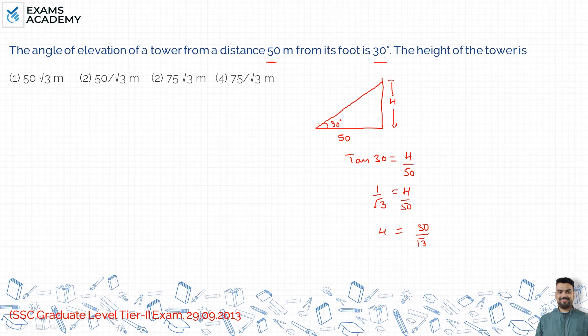If you have this option, you can say 50 upon root 3. If you have no option, then you can multiply the root over. Clear the value? This option is 50 upon root 3.